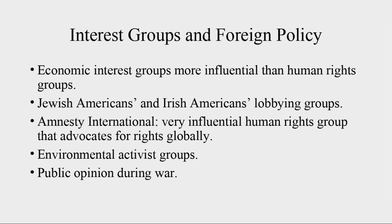There are some influential human rights groups. Amnesty International is very successful — they expose human rights abuses and shame nations into changing their behavior. If a journalist is being tortured in Egypt, Amnesty International will basically harass them until they agree to let the journalist go. There are also environmental groups like Greenpeace, the Sierra Club, and the NRDC — not as successful because they're going up against economic groups that are just more powerful.